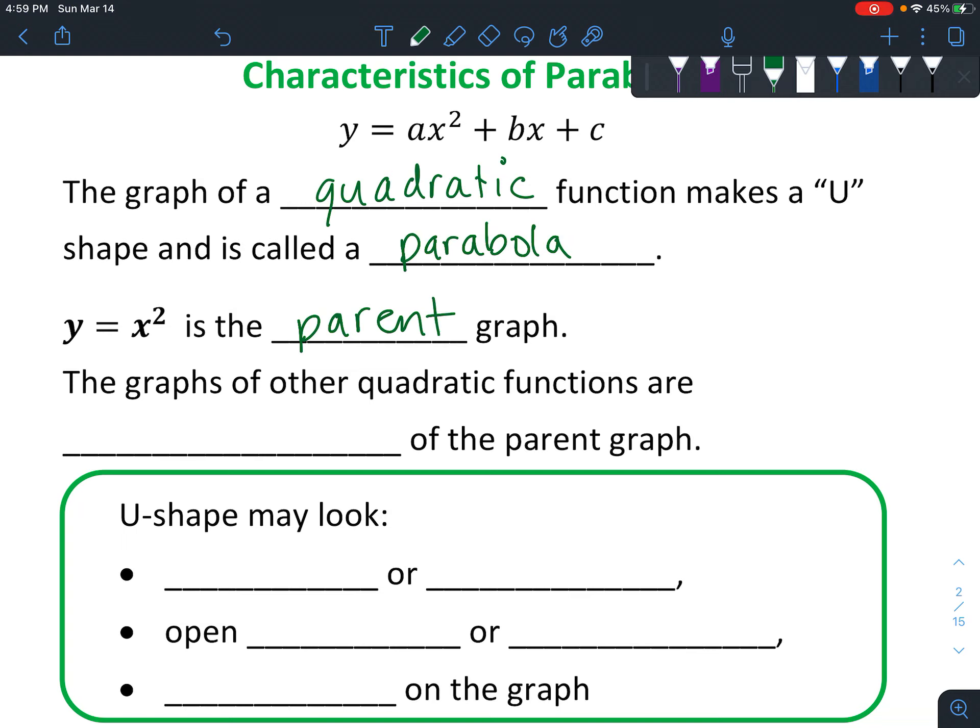Y equals x squared is the very basic form of the graph, and then other graphs are transformations of that parent graph. So there might be things like if you add one to it, it makes the whole graph move up one, and if you have numbers in front of the x squared, then those different numbers can make the graph look different.